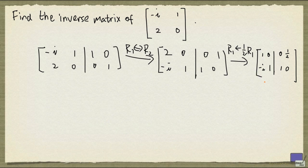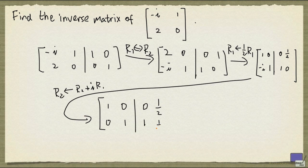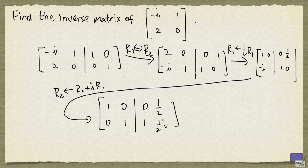To turn this into 0, I just add i times row 1 to row 2. And this is precisely what we had before. And you can see we saved a few operations.